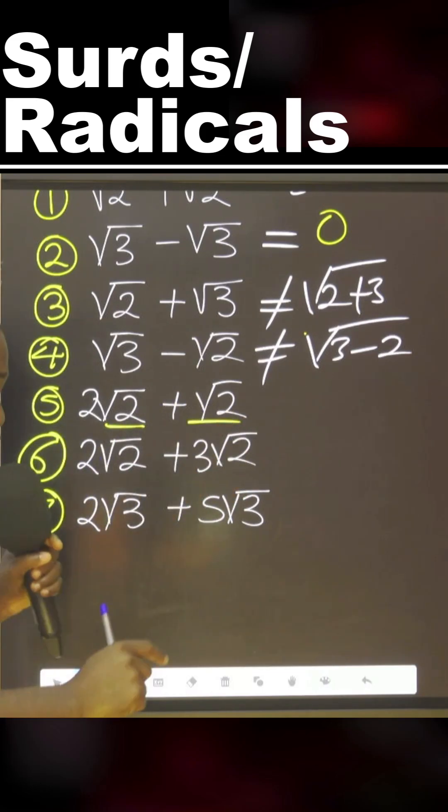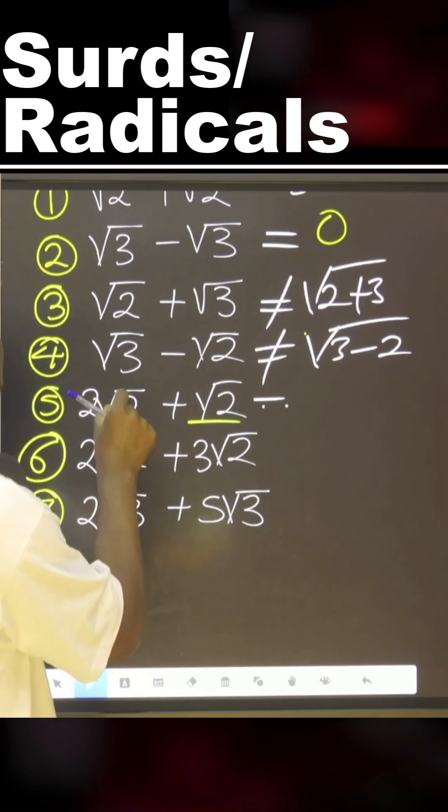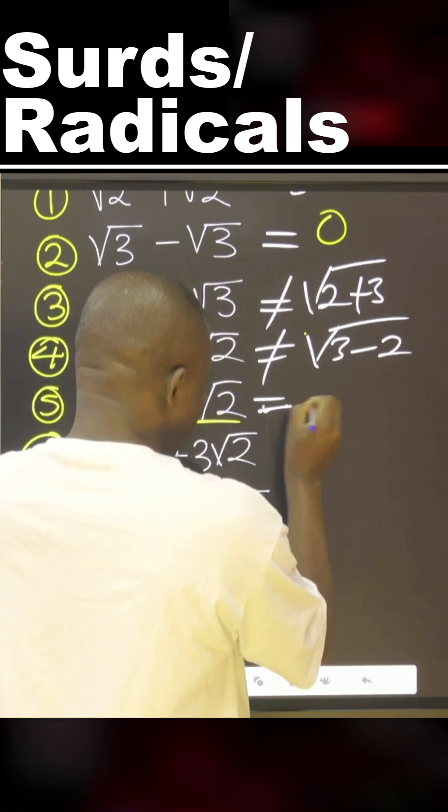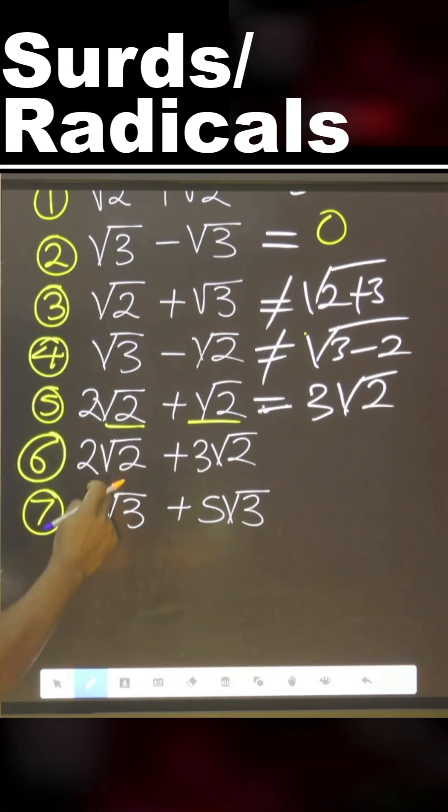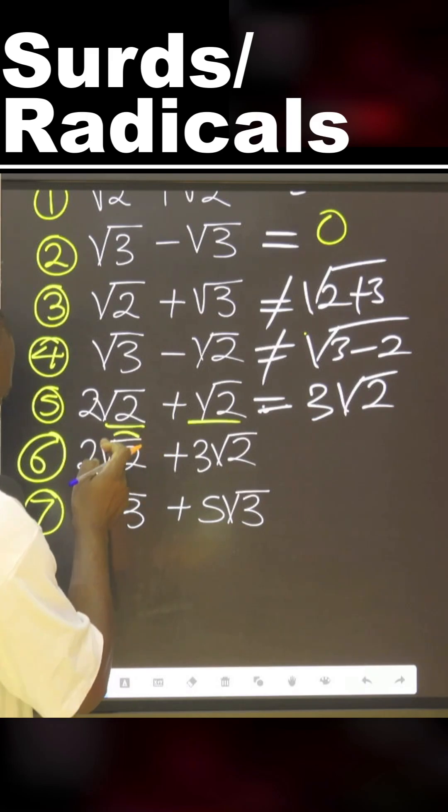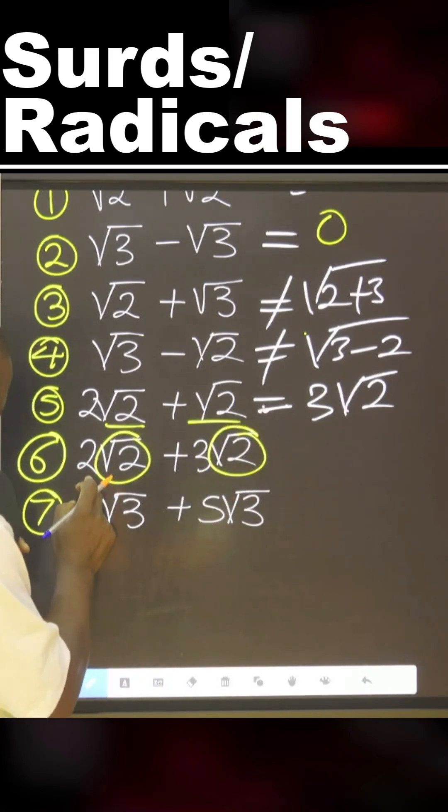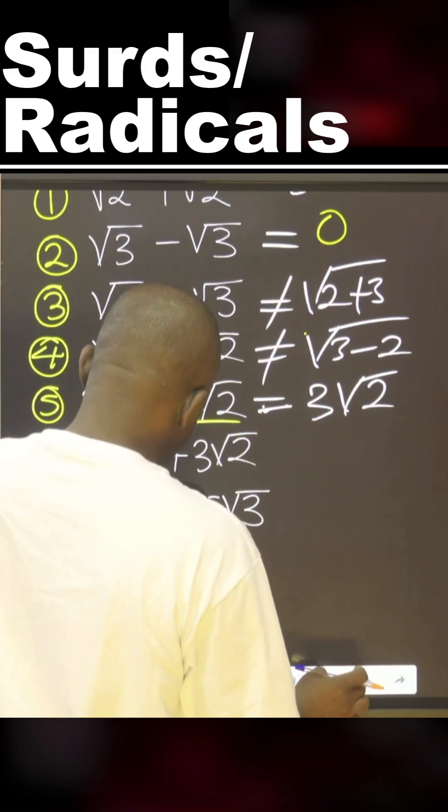For this one, see? Same tribe. Same tribe. Therefore, how many? Two of these, one of these. That is three all together. This one, the same thing. Same, same. That is to say, this and these are the same. These two, these three. That is five all together. Five.